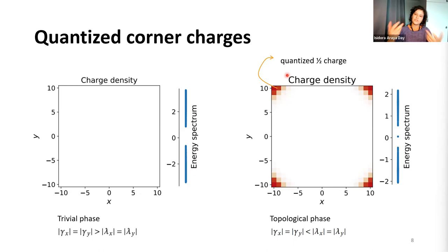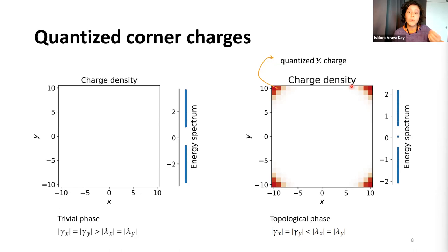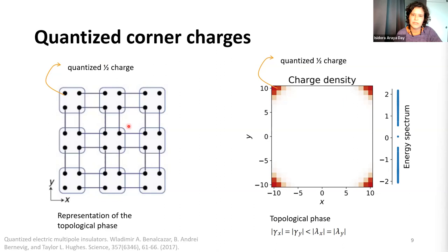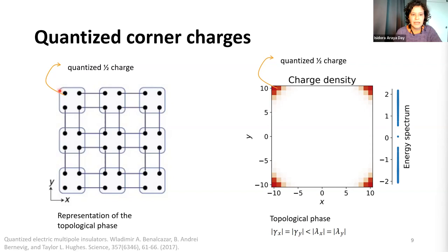The charge density decays exponentially towards the bulk. To have this result, sublattice symmetry is not really important, but the anti-commuting mirrors are an important component. Another way to understand it is to look at the real space representation — the tight-binding model in a limit where gamma equals zero, so we have no hoppings inside the unit cell but we do have hoppings connecting orbitals from different unit cells. With gamma equals zero and lambda equals one, we see four isolated orbitals at the corners. With four orbitals per unit cell at half-filling — two electrons available — we understand the corner modes with quantized one-half charge.